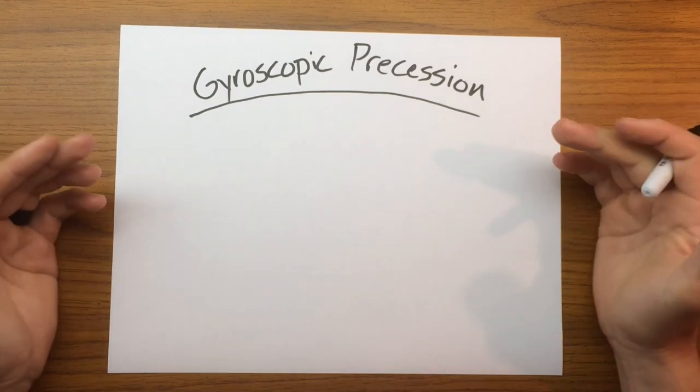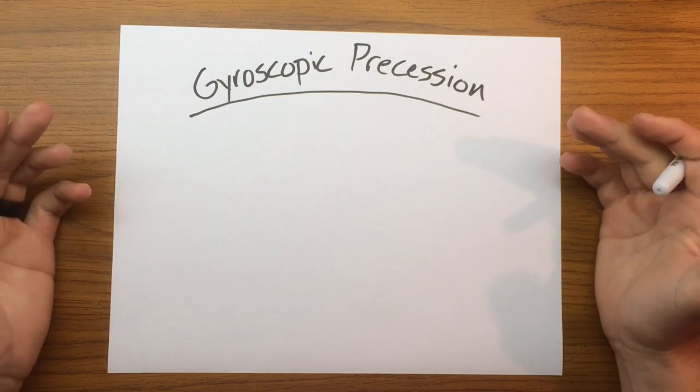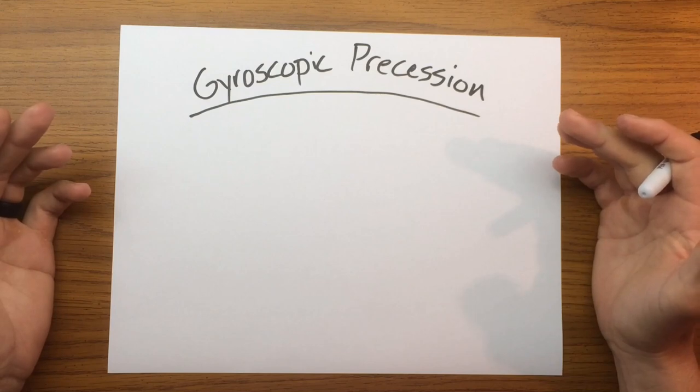That said, what exactly is gyroscopic precession? It's a phenomenon of precession occurring in rotating bodies that manifests as an applied force occurring 90 degrees after application in the direction of rotation.